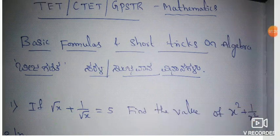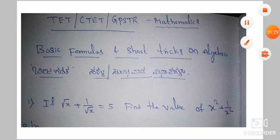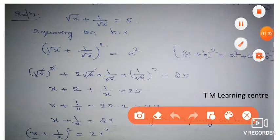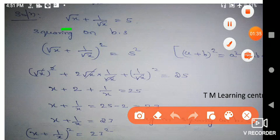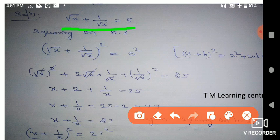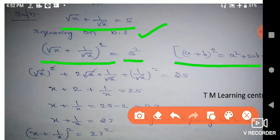How do you find that value? Simple steps: squaring on both sides. So we can square both sides. The step is: root x + 1/root x whole square = 5 whole square. For this, one formula: a plus b whole square is equal to a² + 2ab + b². Here a is root x and b is 1/root x.